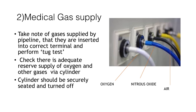The pipelines are connected to the anaesthetic machine via a non-interlocking screw thread connector. When checking the machine, you should check that the colours match up at the Schrader valve and the pipeline, and you should also perform the tug test — ensuring that when you tug the pipeline, it is securely seated in the Schrader valve at the wall. In addition to the pipeline, you should also check there is an adequate reserve supply of oxygen and other gases available via cylinders on the back of the anaesthetic machine. These spare cylinders should be full, securely seated, and also turned off so they are not leaking.